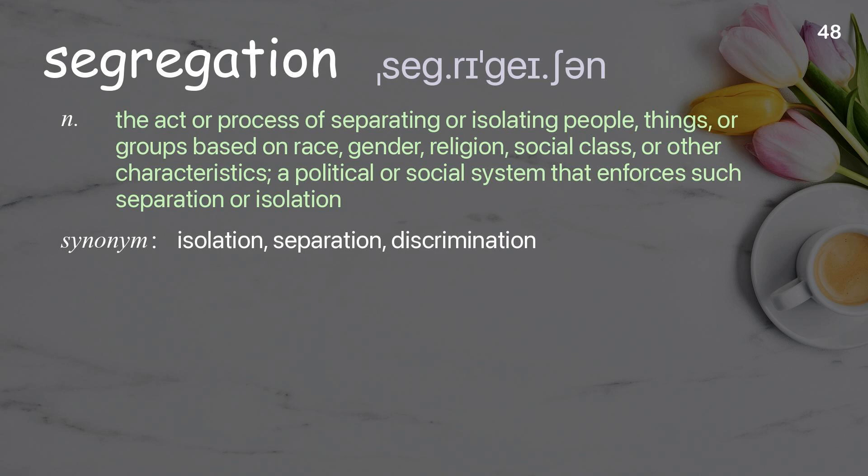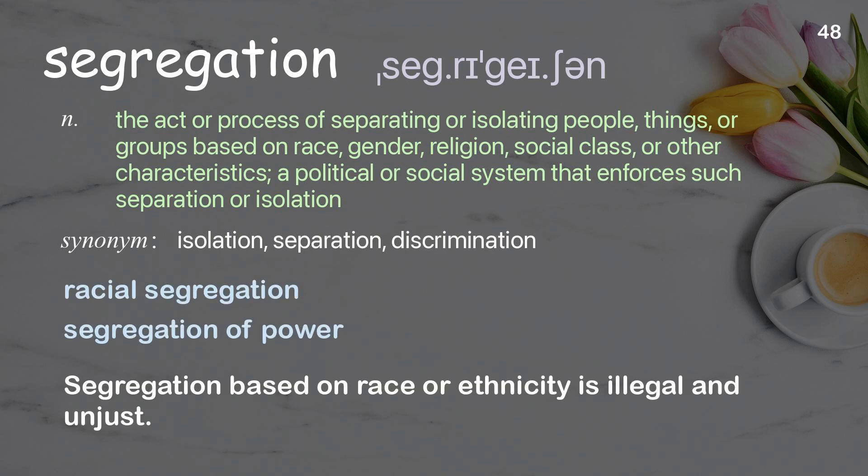Segregation: the act or process of separating or isolating people, things, or groups based on race, gender, religion, social class, or other characteristics; a political or social system that enforces such separation. Examples: racial segregation; segregation of power. Segregation based on race or ethnicity is illegal and unjust.